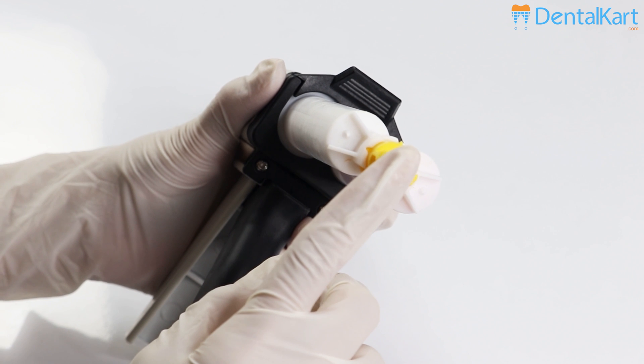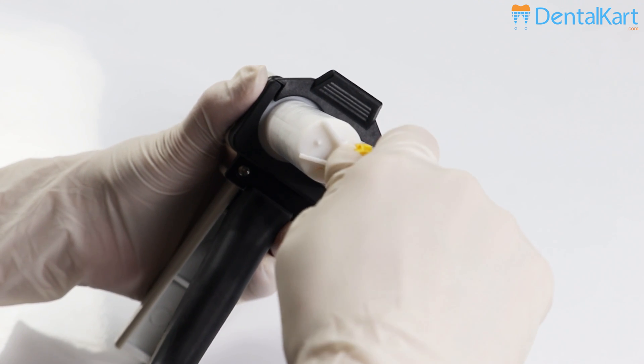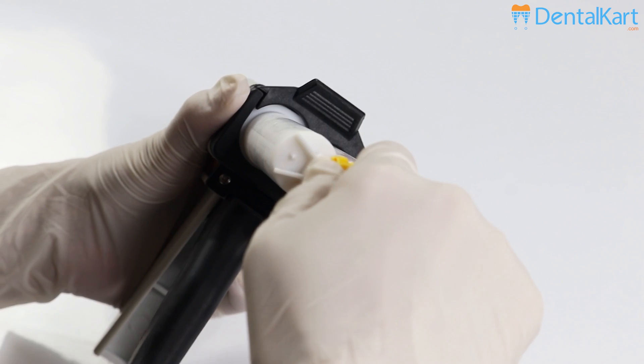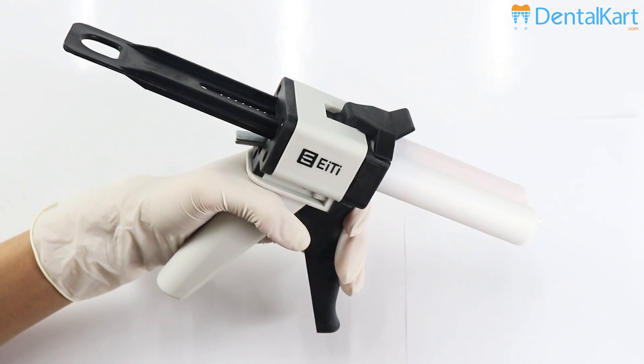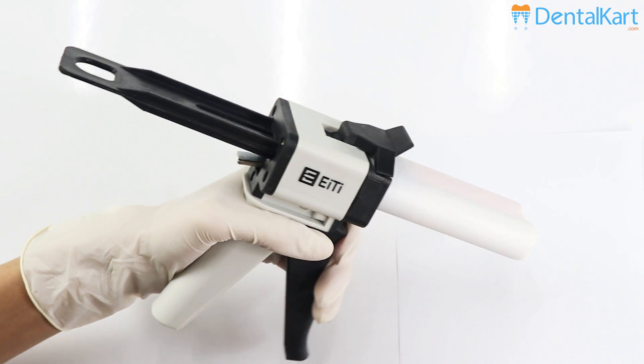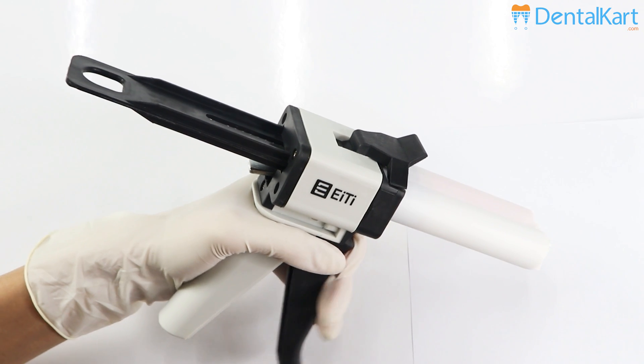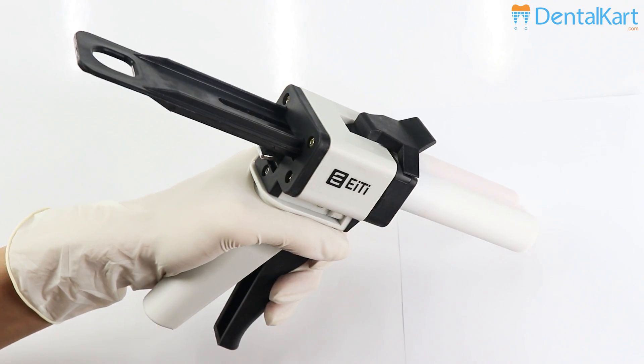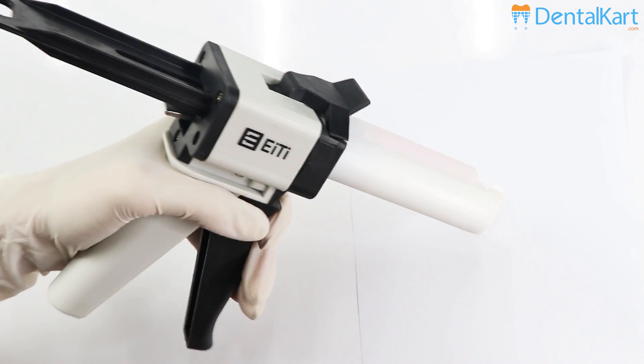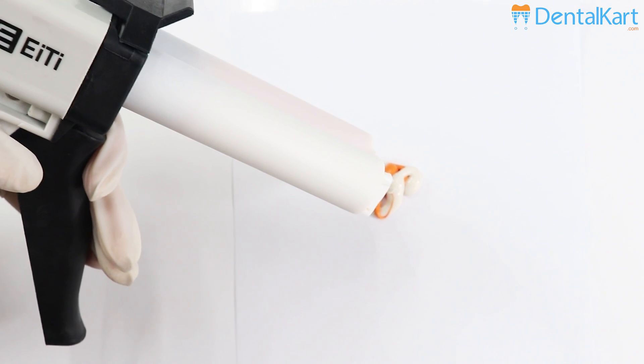Remove the cartridge cap by rotating one-quarter turn anti-clockwise and then peel it open. Gently squeeze the dispenser handle to extrude a small amount of material from the two openings. This is done to ensure that the cartridge is not blocked.